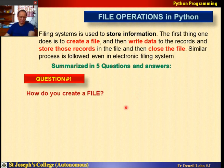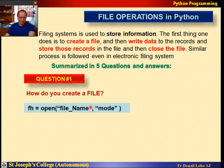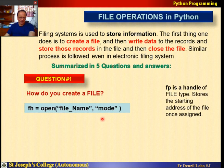The first question is: how do you create a file? Those who have done C will remember starting with FILE star fp. In Python it is much simpler — just say fh, that is file handle, equals open. You give the file name and then the mode. Mode means whether you are going to create a new file, read a file, or append data to a file. The file handle fh stores the starting address of the file once assigned.